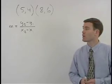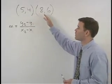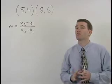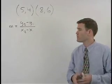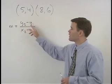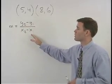Let's say we're asked to find the slope of the line that passes through the points (5,4) and (8,6). Remember, we don't need to graph the line. All we have to do is use our slope formula: m equals y2 minus y1 over x2 minus x1.